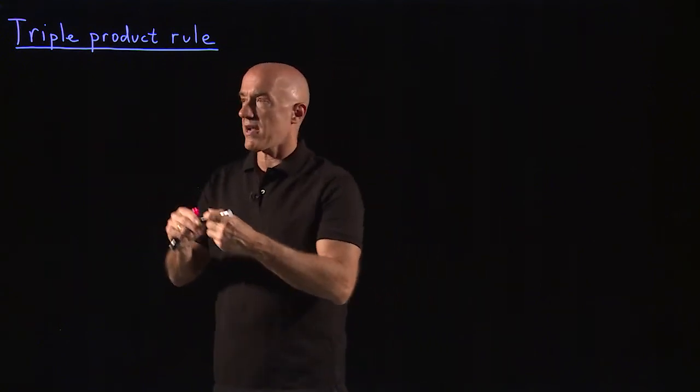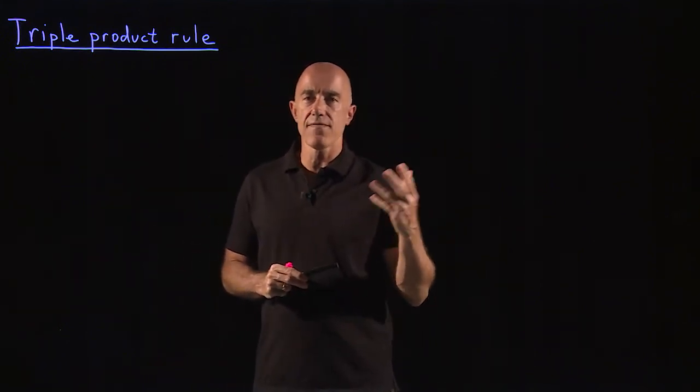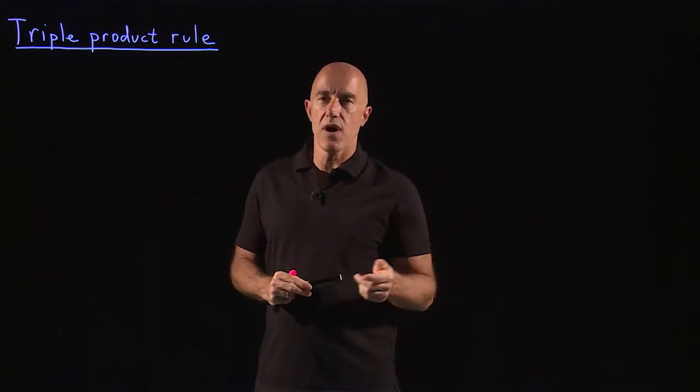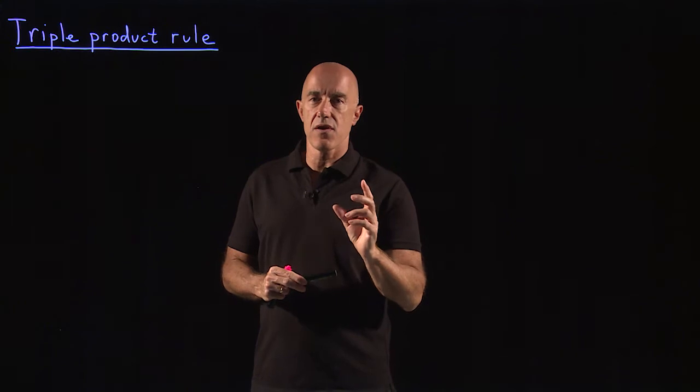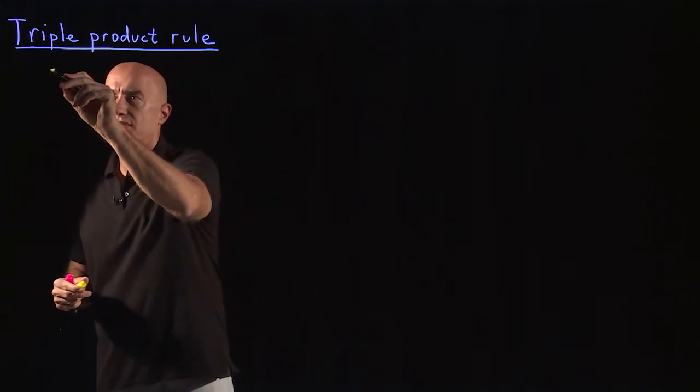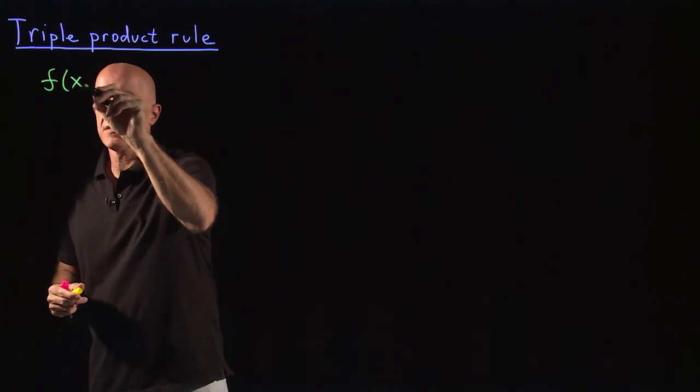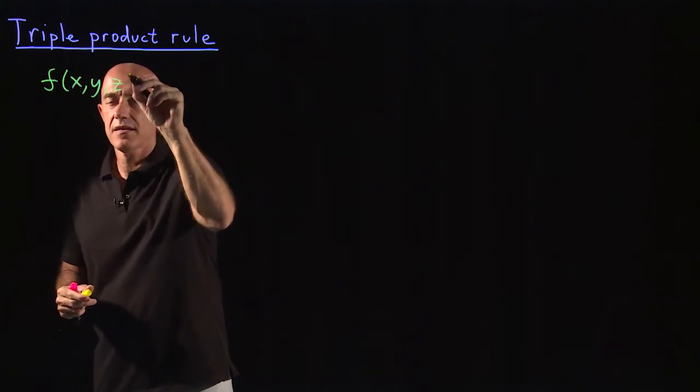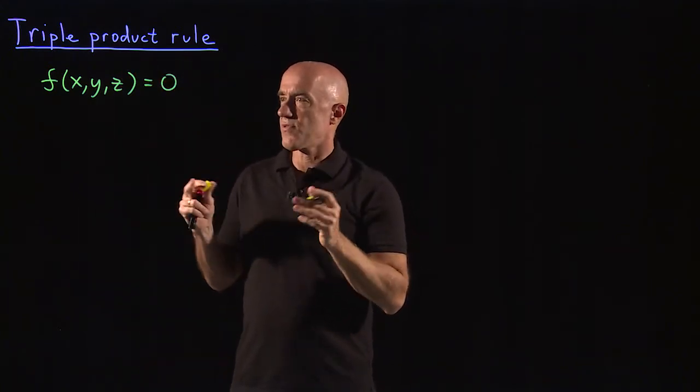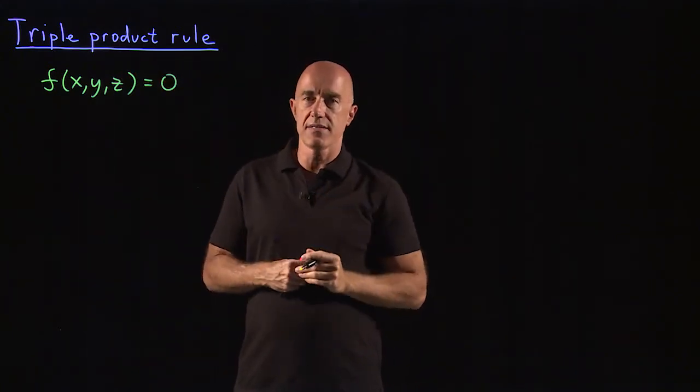Okay, so what is the triple product rule? We assume we have three variables, and I'll call them x, y, and z, but they're related. So you can write then a function f of x, y, z equal to zero. So that gives you the relationship between the three variables x, y, and z.